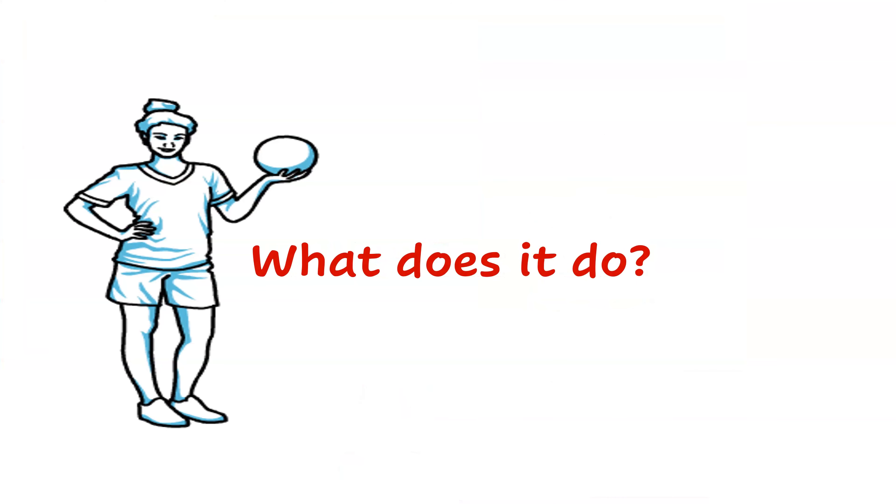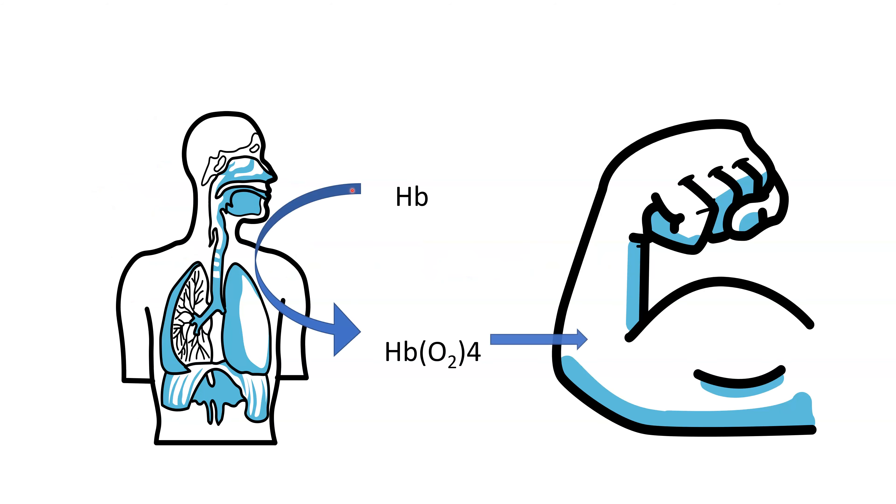What does it do? Hemoglobin transports oxygen from lungs to tissues. Around 98.5% of oxygen transportation happens with the help of hemoglobin.